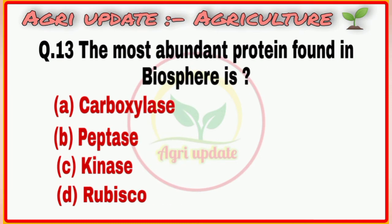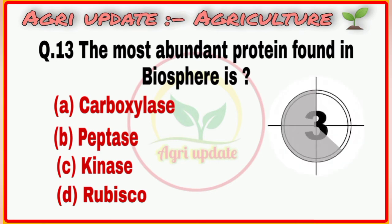Question number 13: The most abundant protein found in the biosphere. Options include peptide, kinetin, and RuBisCO. The right answer is option number D, RuBisCO.